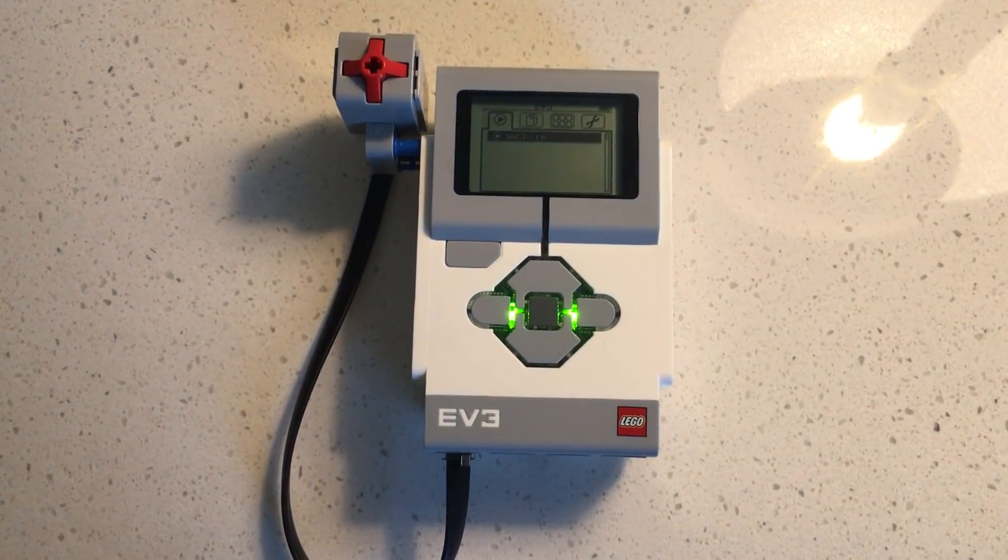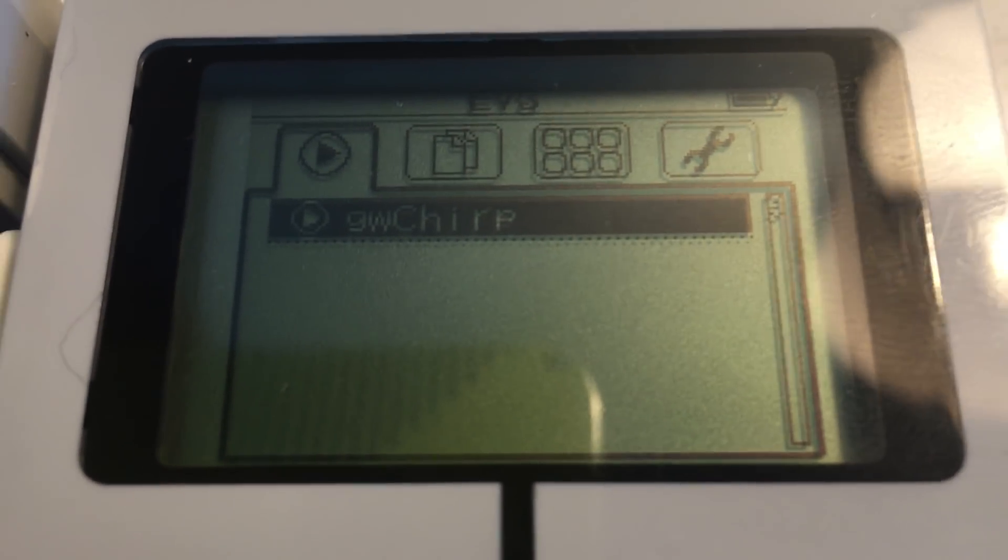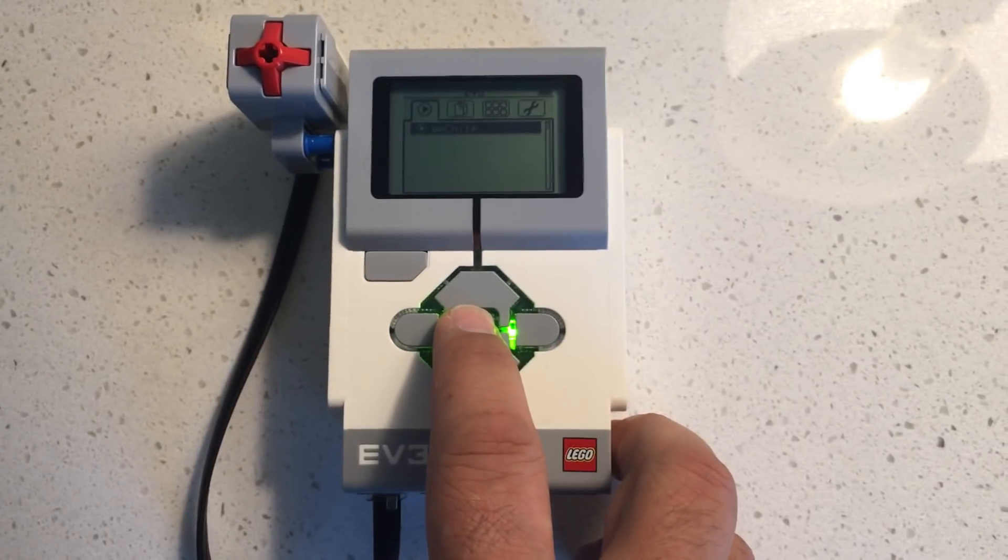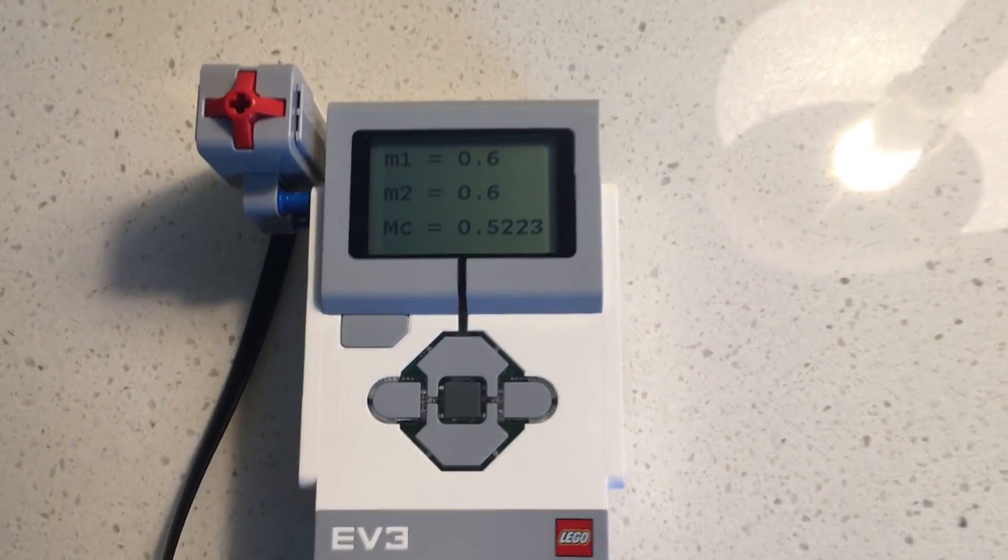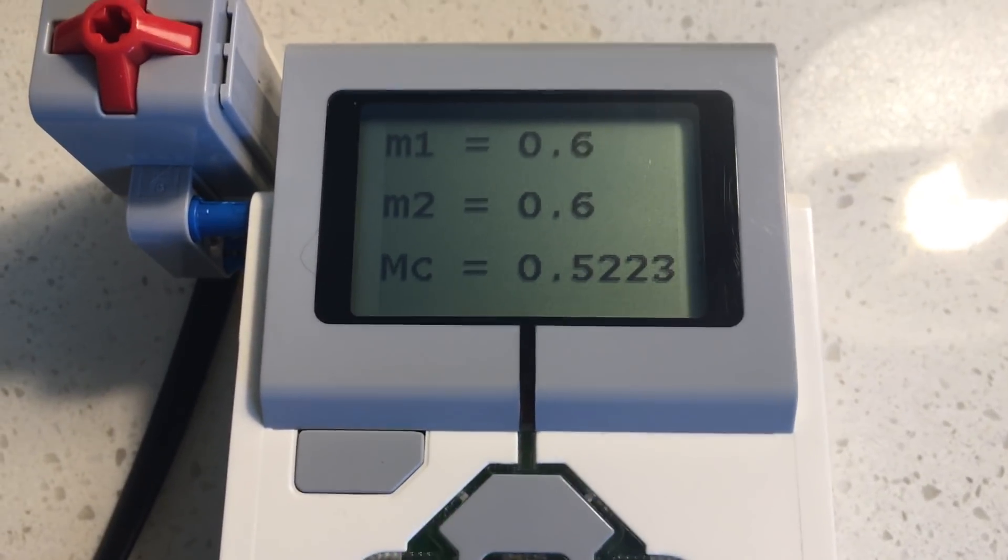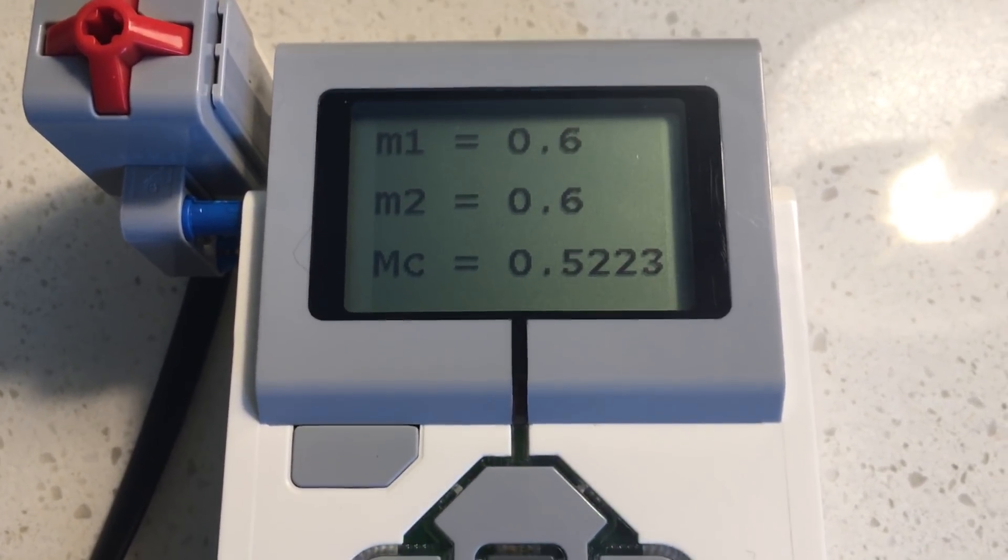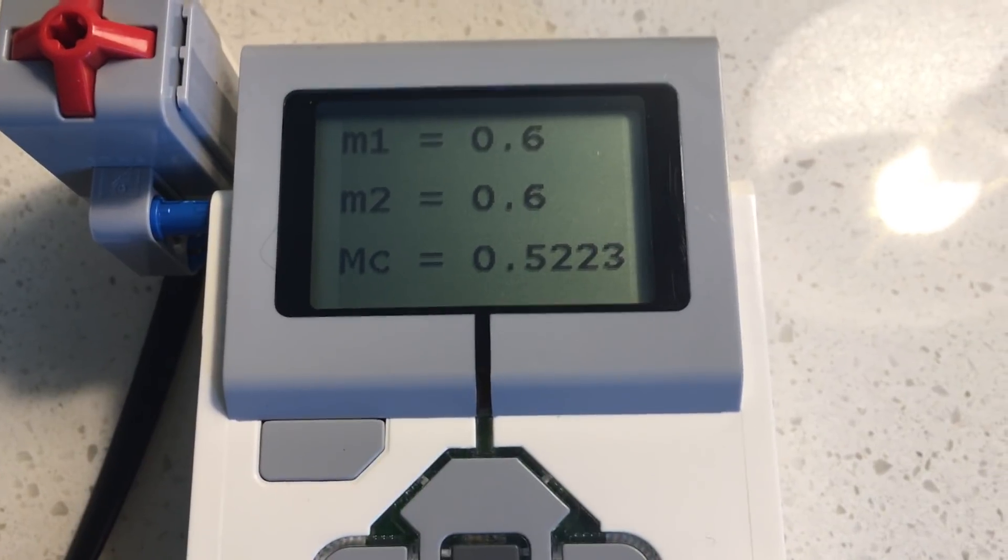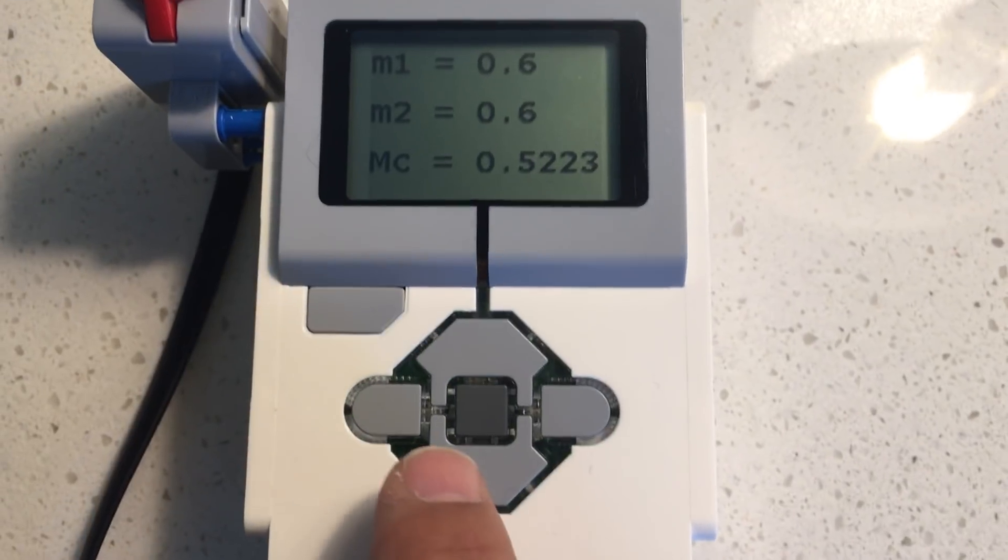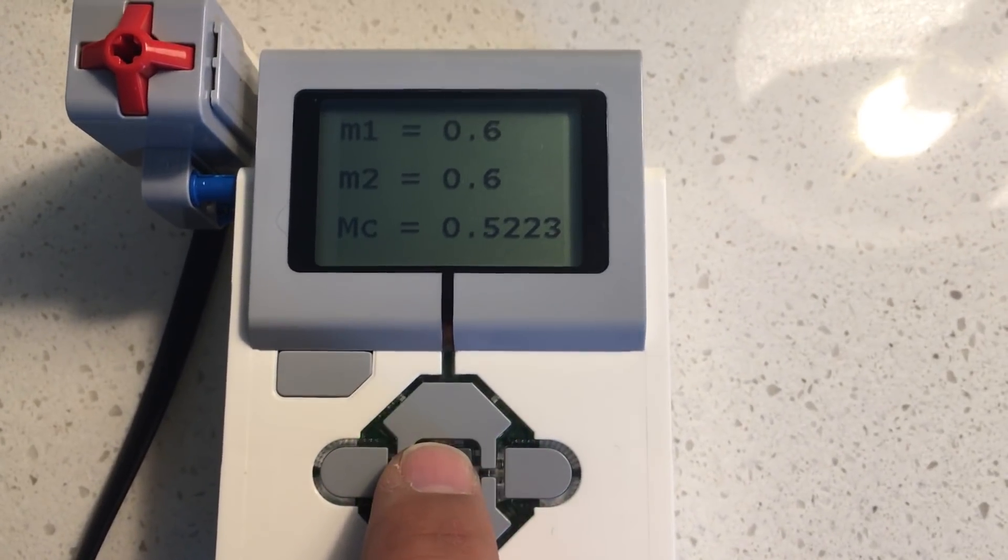So I've already loaded the program on the brick here, so you'll see there it's called gravitational wave chirp. So we'll activate the program by simply pressing the center button. The program runs. What it does is it displays the masses on the screen, and then the particularly important combination of masses called the chirp mass. And so if you just press the center button, it will play the appropriate sound associated with this.